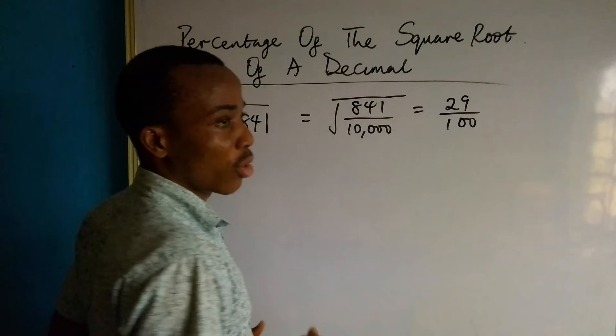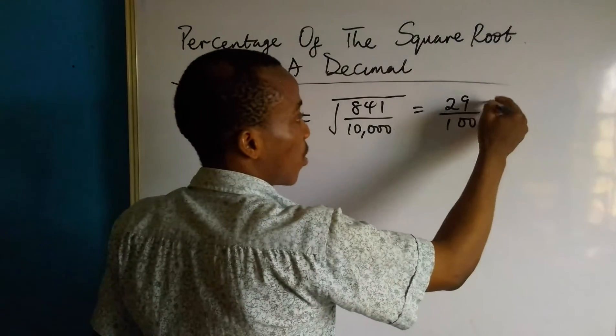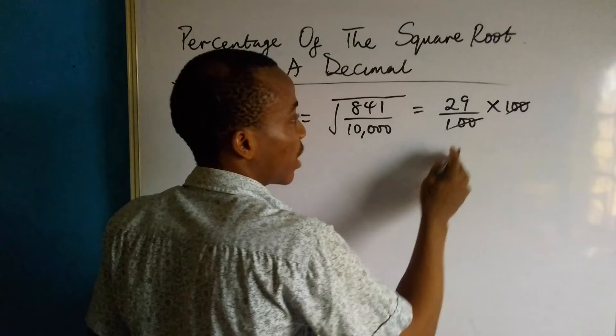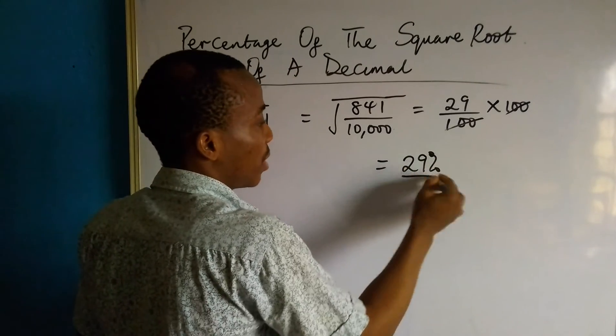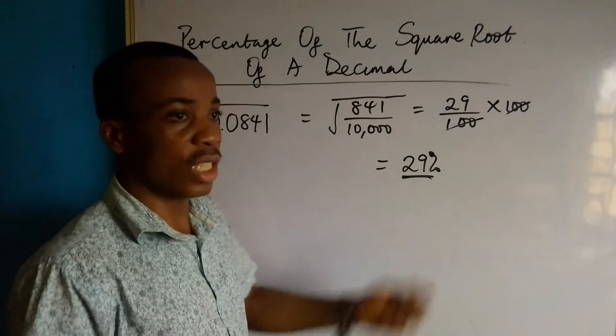When you want to change a fraction to percentage, you can just multiply it by 100. So if we multiply this by 100, 100 cancels out and the answer is 29%. This as percentage gives us 29%.